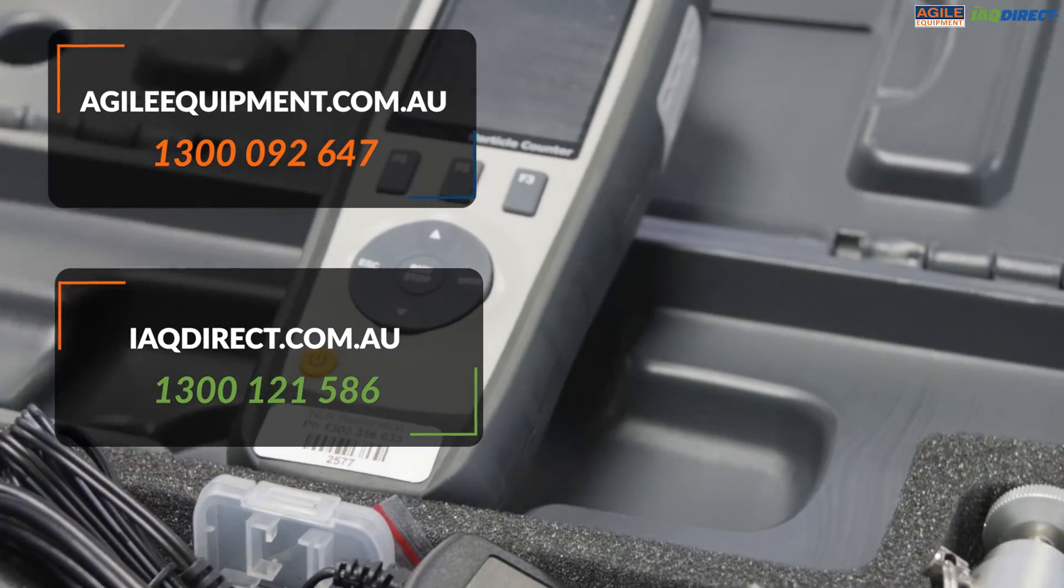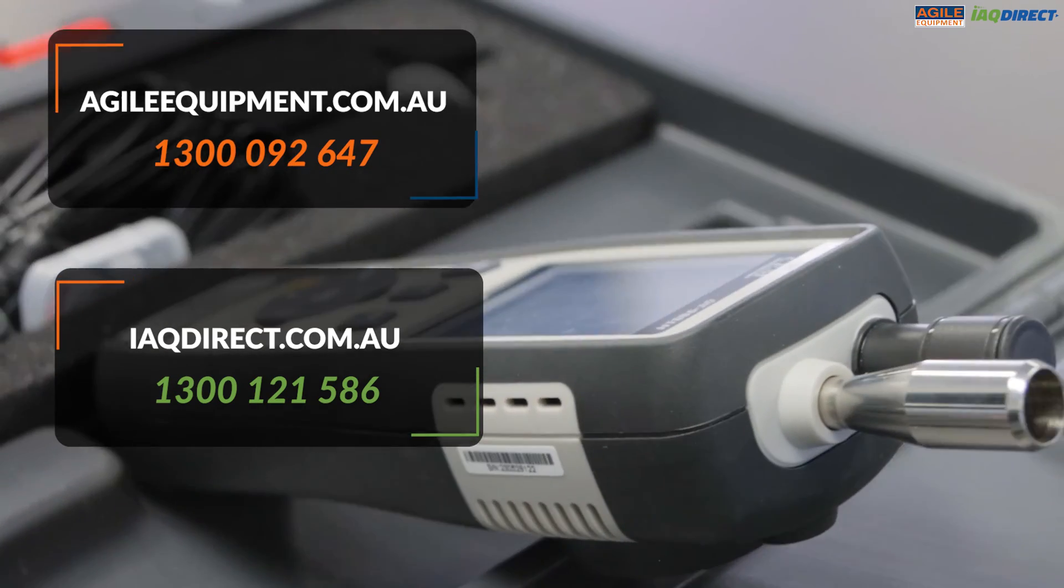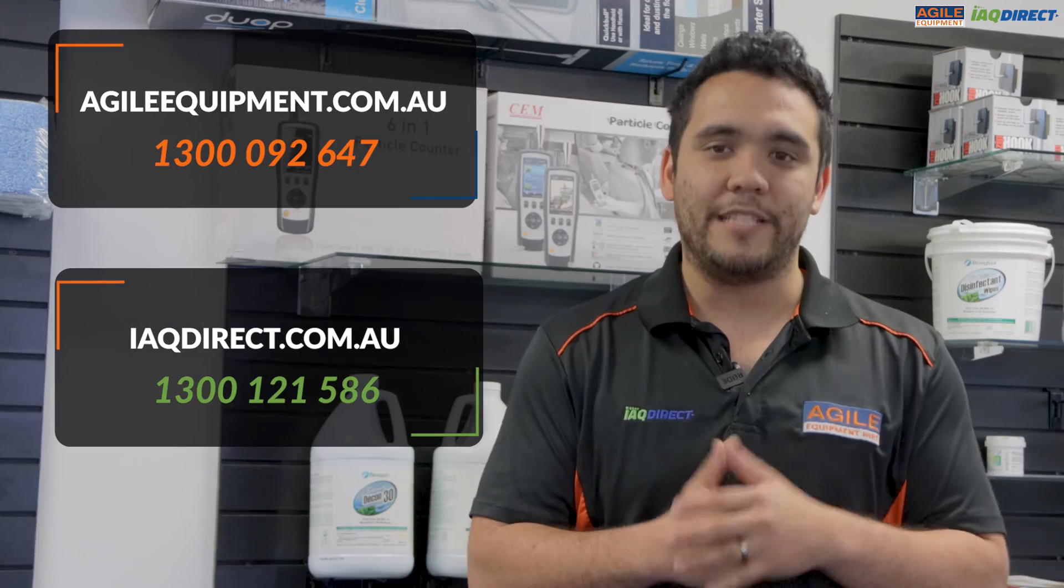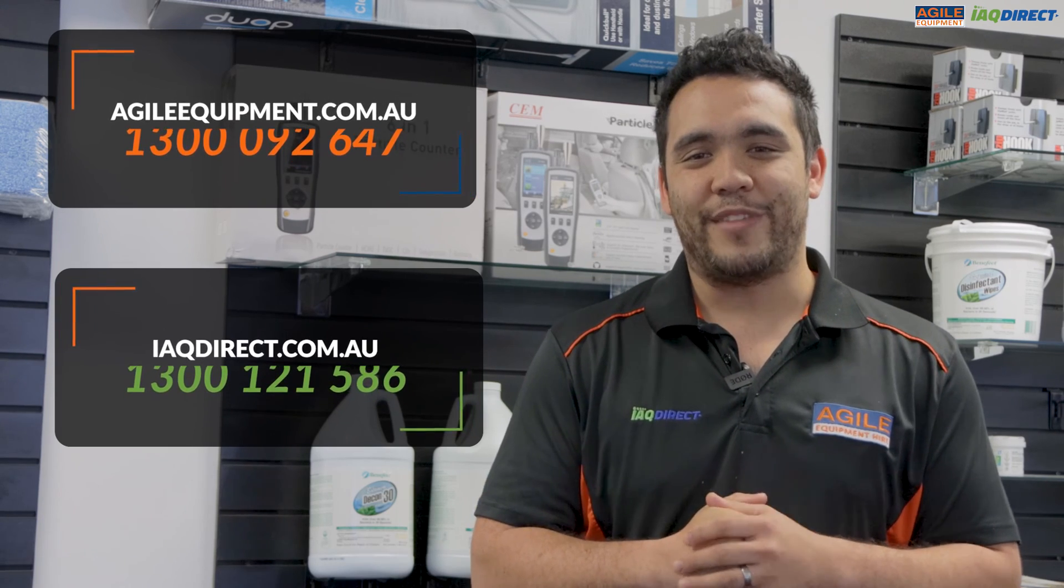You can buy both models from agileequipment.com.au and iaqdirect.com.au. If you have any questions, please feel free to contact us at 1300 092 647. Thanks for watching.